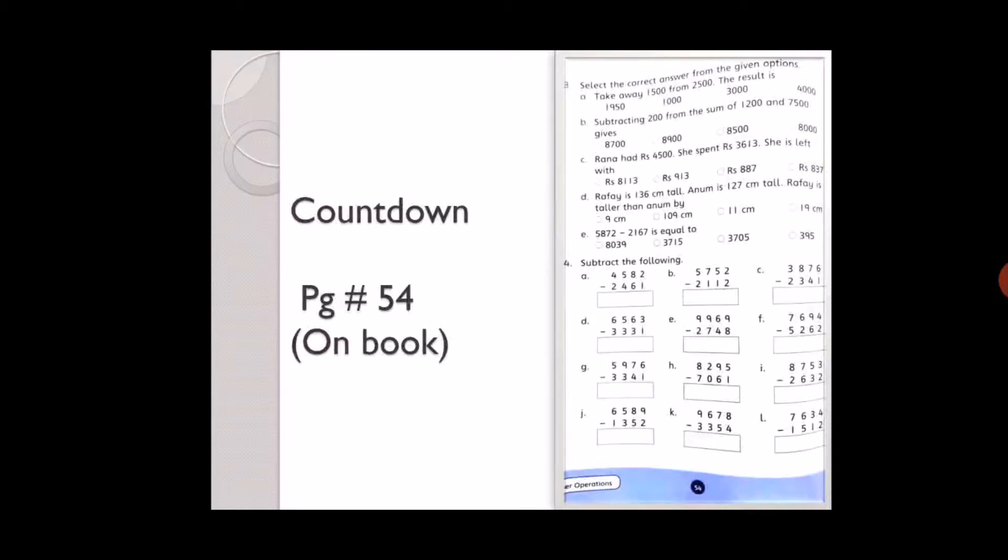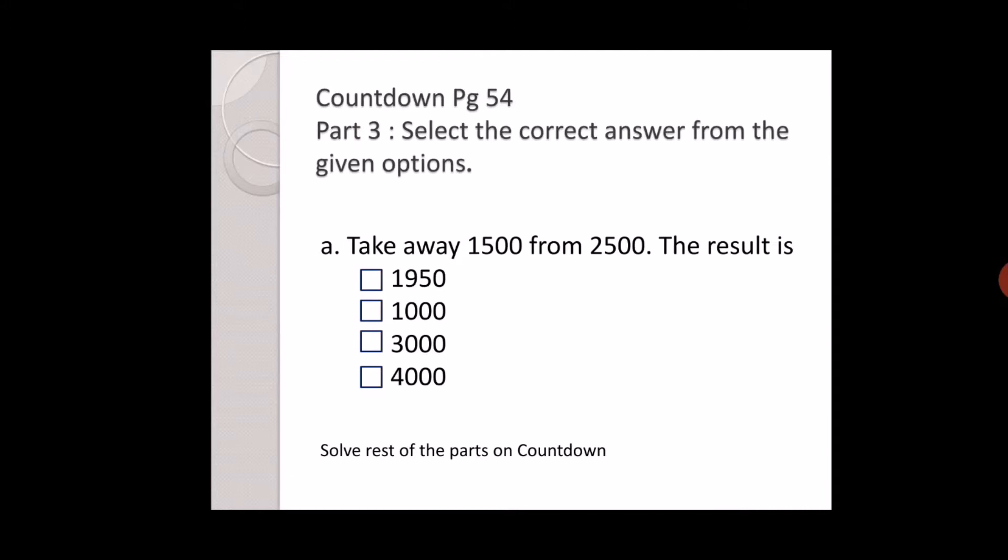Countdown page number 54. On book, write day and date. Part 3: Select the correct answer from the given options. Take away fifteen hundred from twenty five hundred. The result is one thousand nine hundred fifty, one thousand, three thousand, or four thousand. Take away means minus. Twenty five hundred minus fifteen hundred. The answer is one thousand.